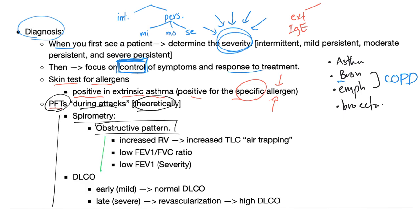Asthma is obstructive, so you see an obstructive pattern — the patient cannot get the air out. Therefore there is air trapping with increased residual volume and increased total lung capacity. There is a low FEV1-to-FVC ratio because this is obstructive lung disease. Once you diagnose obstructive, your next step is to determine severity by looking at the FEV1 alone, not the FEV1/FVC ratio.